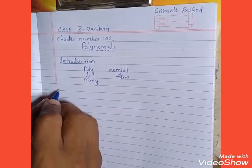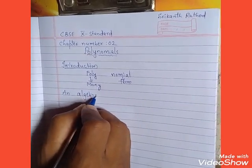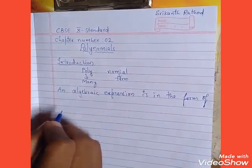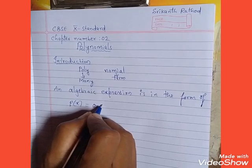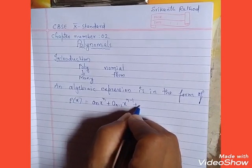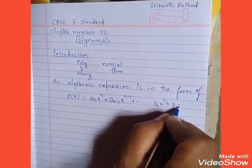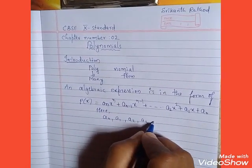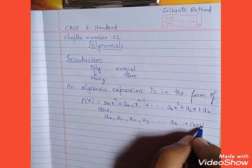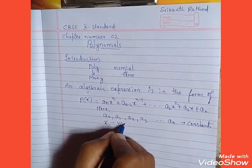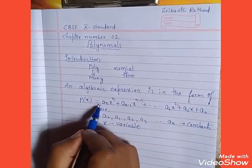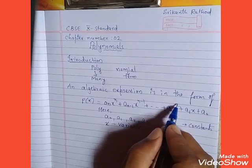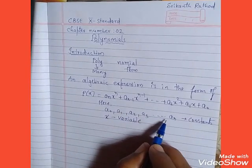One definition: an algebraic expression is in the form of p(x) or f(x) equal to aₙxⁿ plus aₙ₋₁xⁿ⁻¹ plus ... plus a₂x² plus a₁x plus a₀. Here a₀, a₁, a₂, a₃, up to aₙ are constants, and x is a variable.